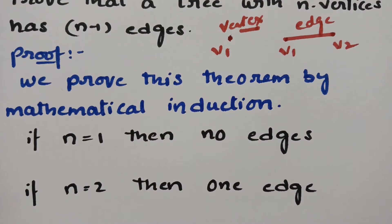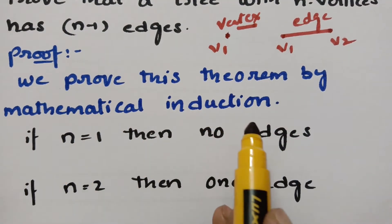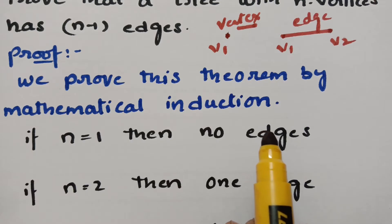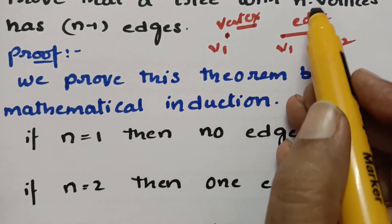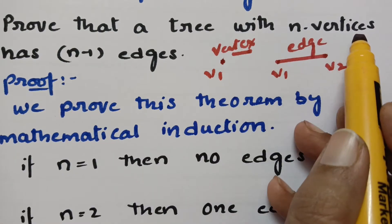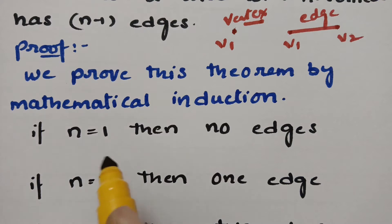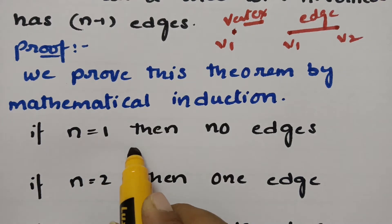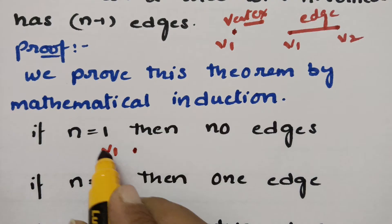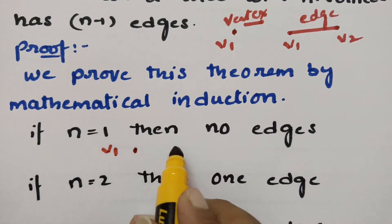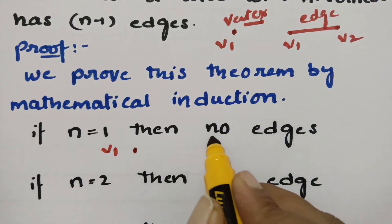We prove this theorem by mathematical induction. According to mathematical induction, we start with n equal to 1 — that is, n vertices. If n equals 1, I take one vertex, v1. With one vertex, we have no edges; we can't draw a line, so there are no edges here.